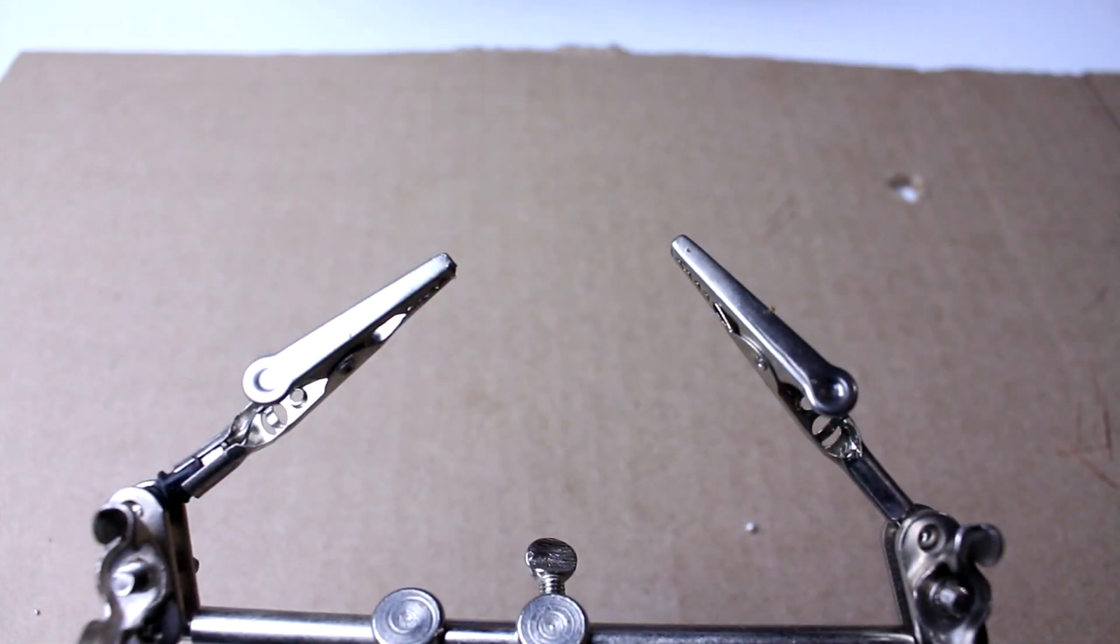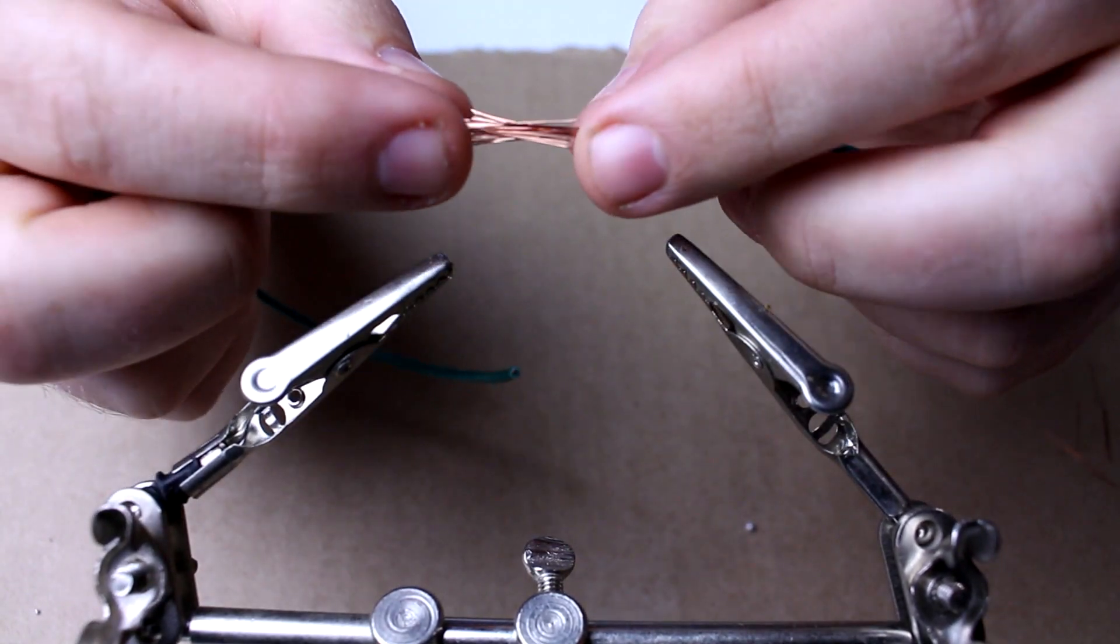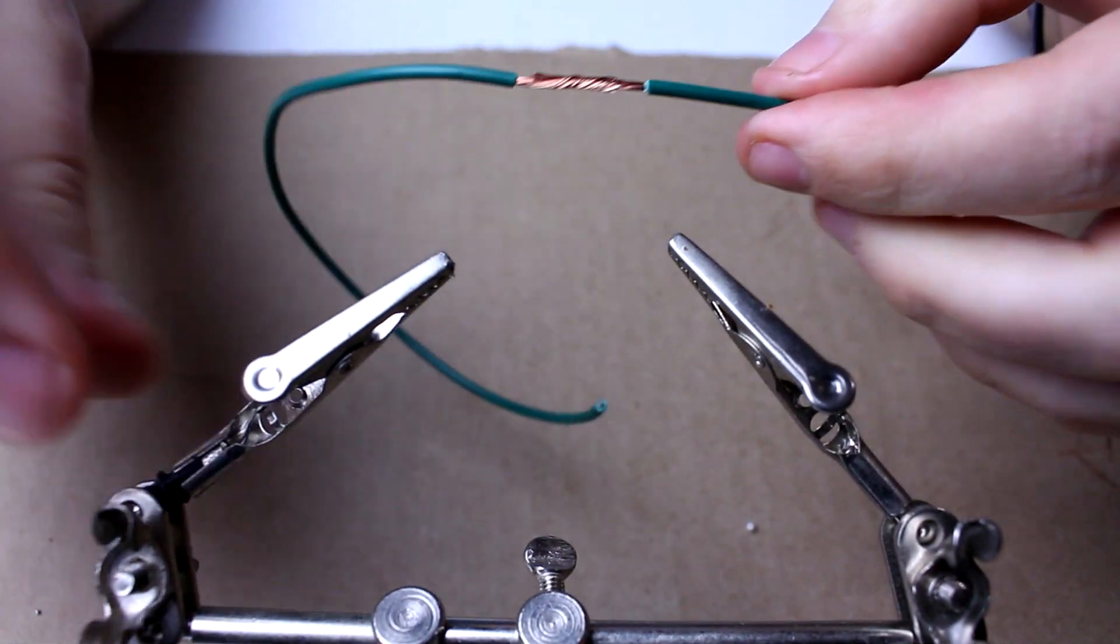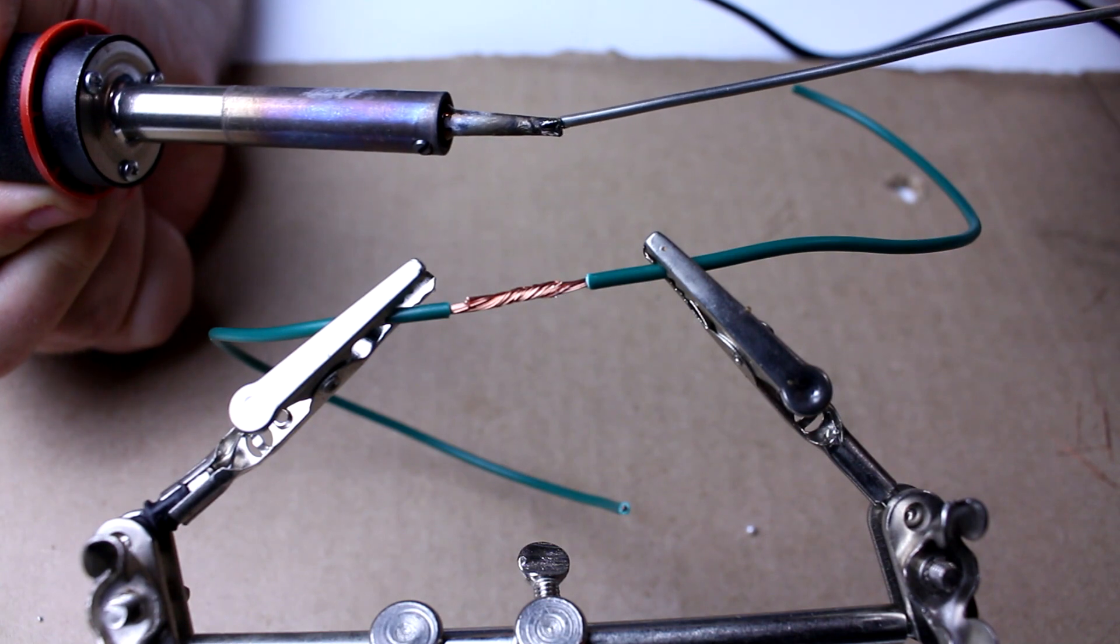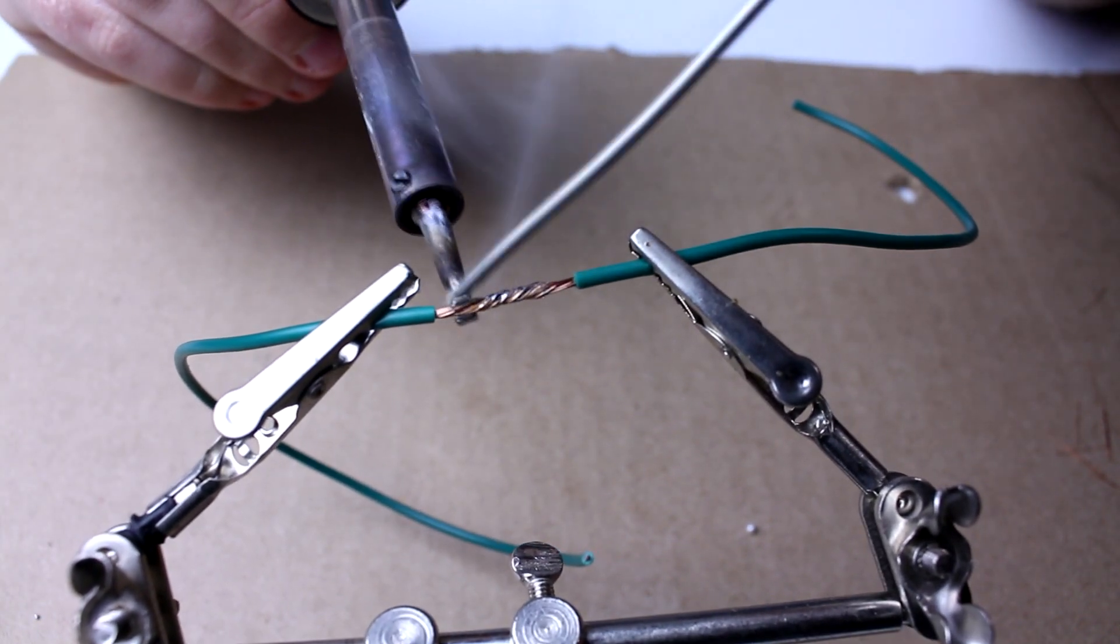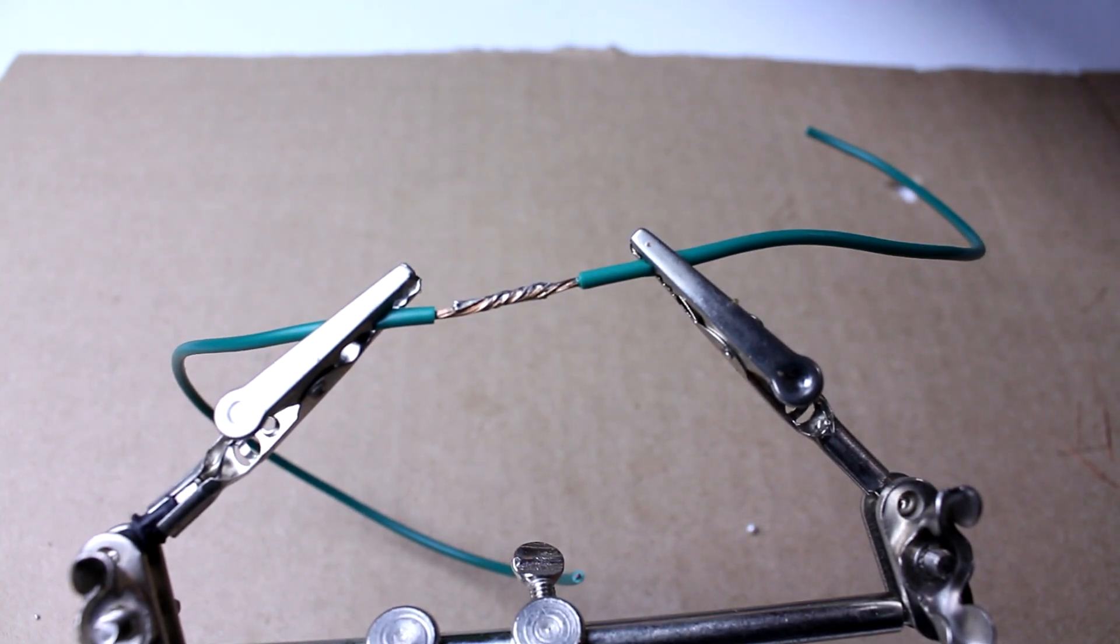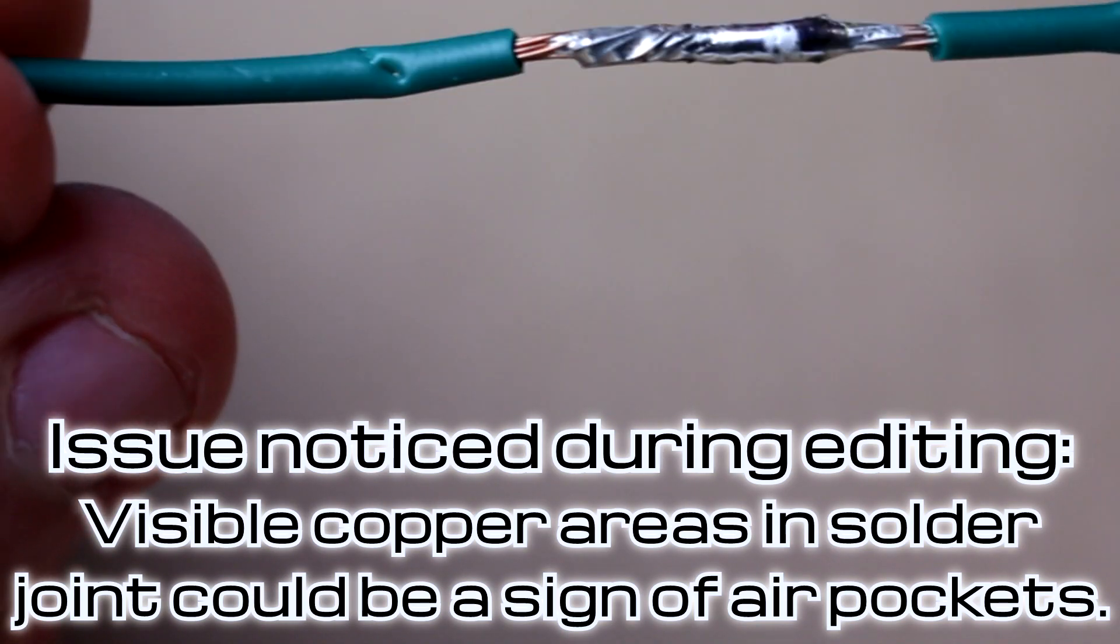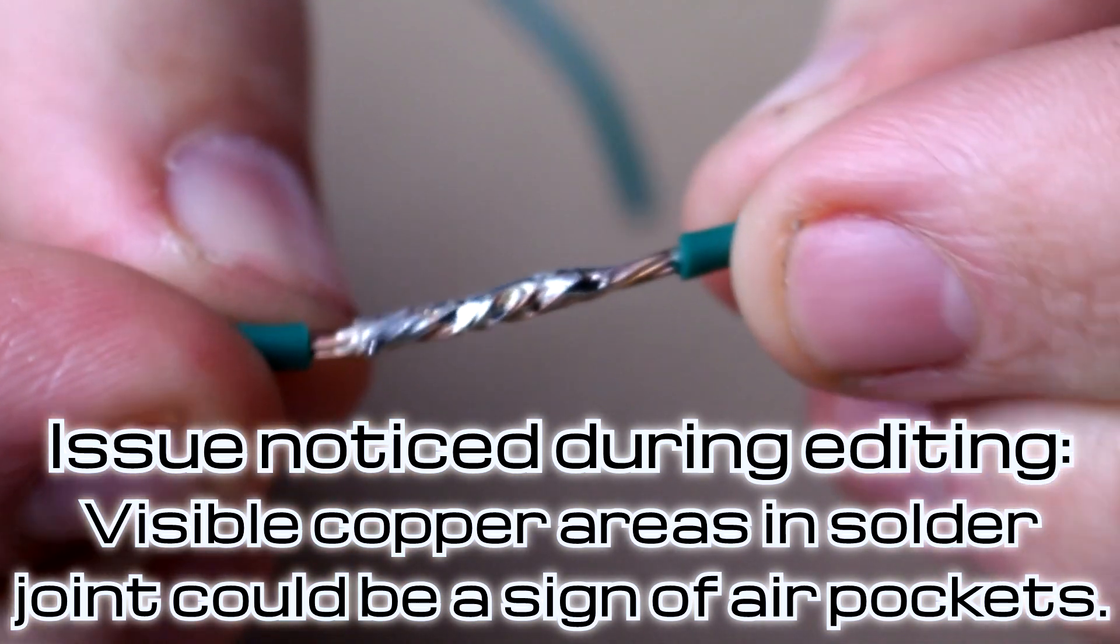I'm going to try to make a real nice looking one for you now. Here's the two wires. Put them together. Twist. They're both pretty clean. Get that tip tinned. There we go. It's a pretty nice one right there. And it's flexible at the end.